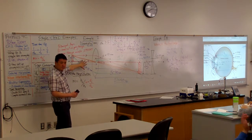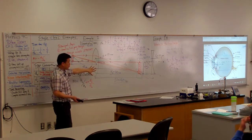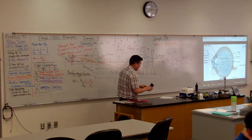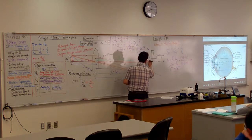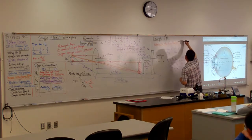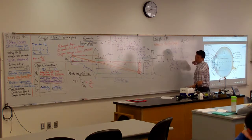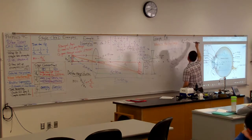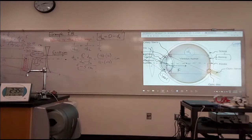Is everyone okay with this example? Because some of the approach we have used here, we are going to continue to use it. Let me write out some things I will want to refer back to. The way we figured out the object distance was: DO2 equals this distance between the lenses minus this image distance DI. That's the formula we used to figure out the object distance for the second lens. I think I might use that again, so let me just leave that there.